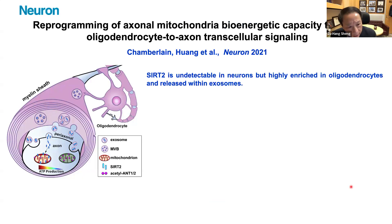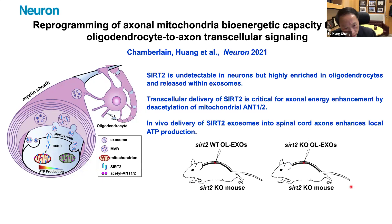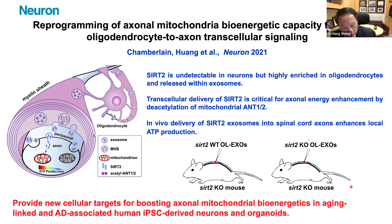SIRT2 is undetectable in neurons but highly enriched in oligodendrocytes and released with exosomes. Trans-cellular delivery of SIRT2 is critical for exosome-mediated energy enhancement by deacetylating mitochondrial proteins ANT1 and ANT2. In vivo delivery of SIRT2 exosomes interspinally can enhance local ATP production. Axon energy deficit is a pathological hallmark in neurological and mental disorders, and declined energy metabolism is also a feature of aging neurons. Our studies provide new molecular targets for boosting axonal mitochondrial energy metabolism in aging-linked or AD-associated human iPSC-derived neurons or organoids — ongoing studies being performed by our current postdocs and graduate students.